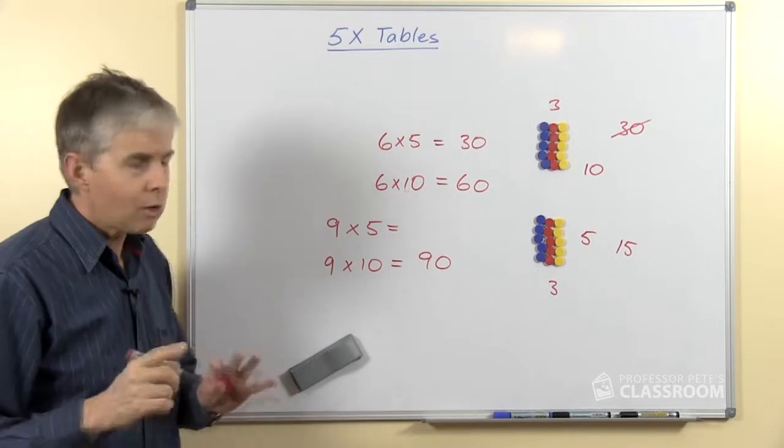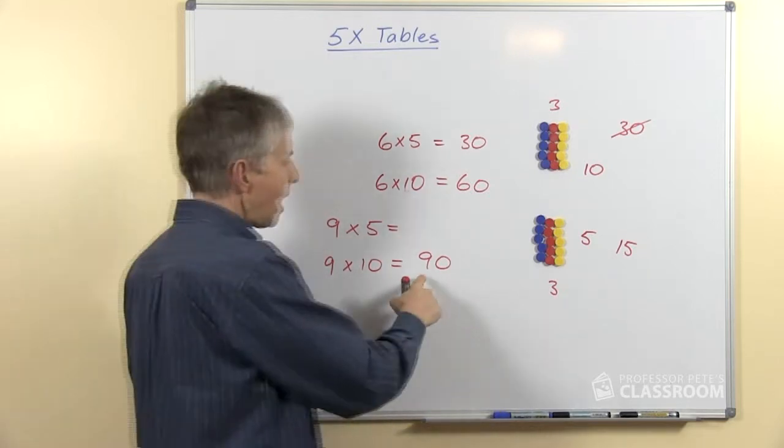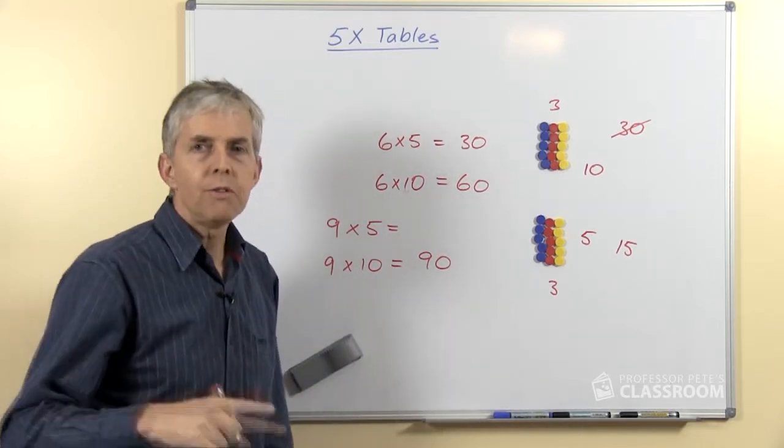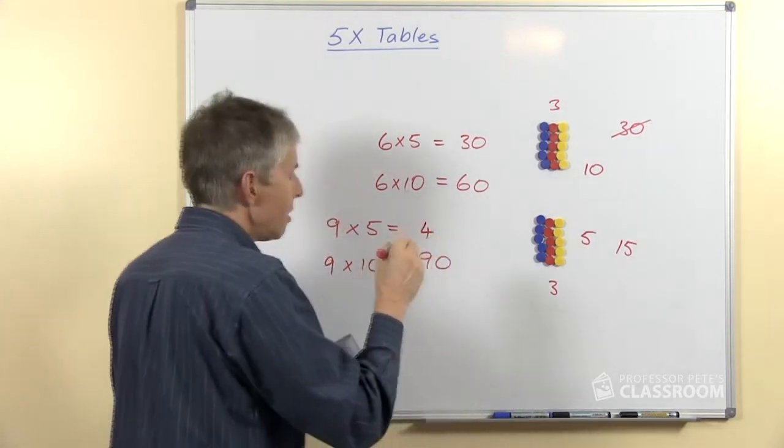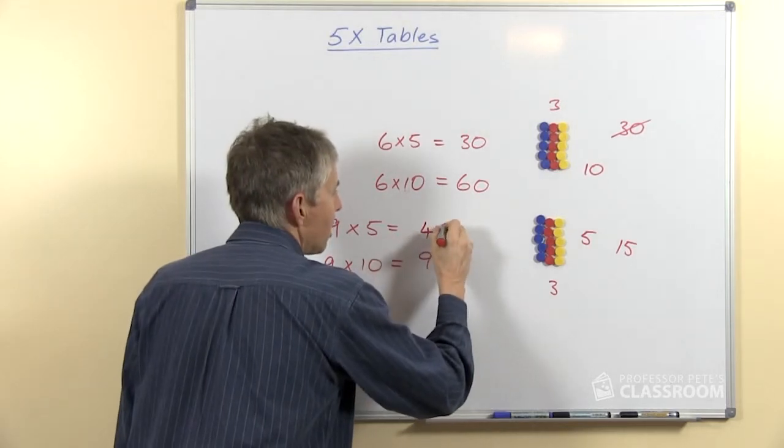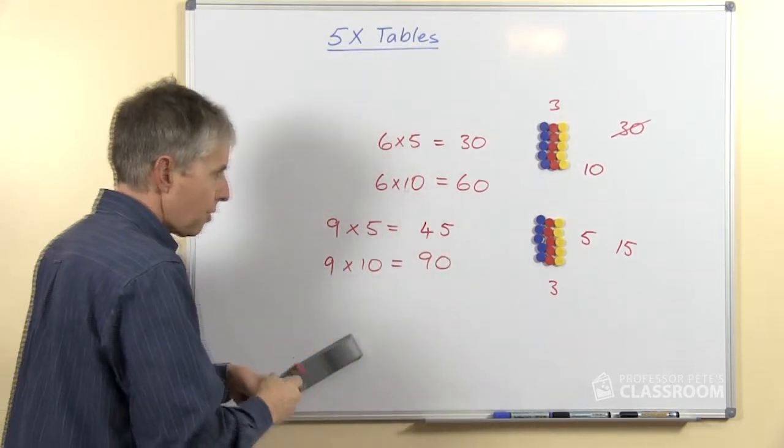That is harder. You have to think a bit more carefully. Half of 9 will be 4 and a half because 2 4's are 8. So 4 and a half will be 4 10's of 40, half of 10 is 5, is 45.